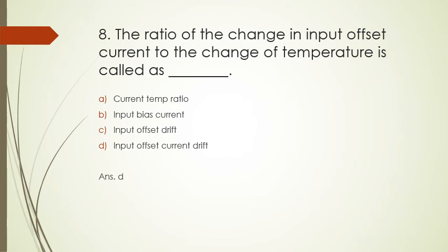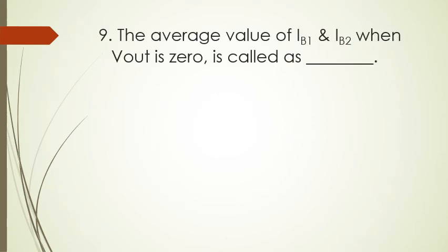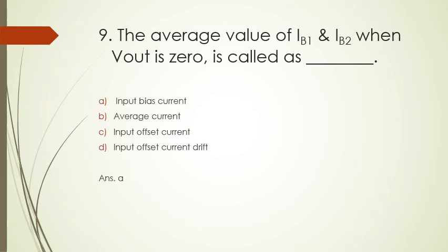Option D is the correct answer. Next: the average value of IB1 and IB2 when Vout is zero is called input bias current. Input bias current is written as IB1 plus IB2 upon 2. There are 15 to 20 characteristics or parameters of op-amp we've discussed. Input bias current is the average of the two currents flowing through the input terminals of the op-amp.